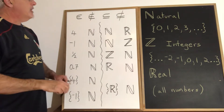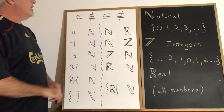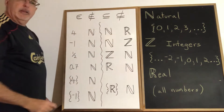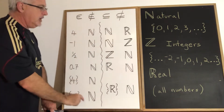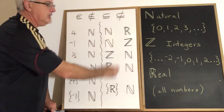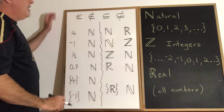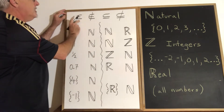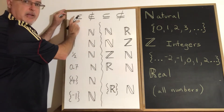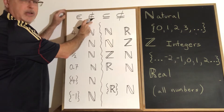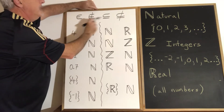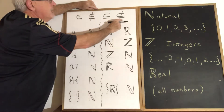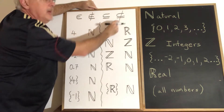Today's Daily Dose of Math is about using these four symbols to fill in the blank spaces in all of these statements. As a reminder: this means 'is an element of,' this means 'is not an element of,' this means 'is a subset of,' and this means 'is not a subset of.'